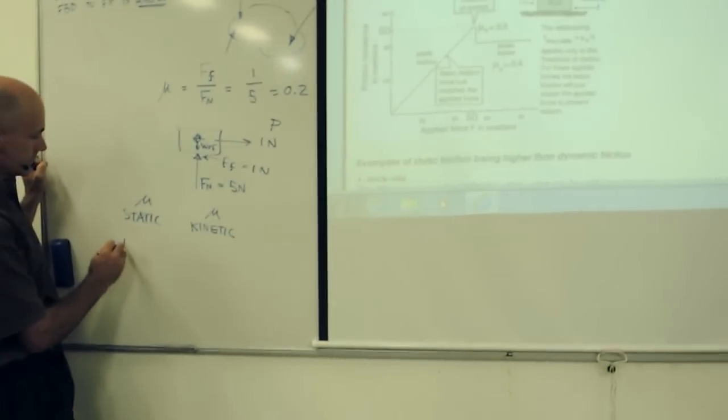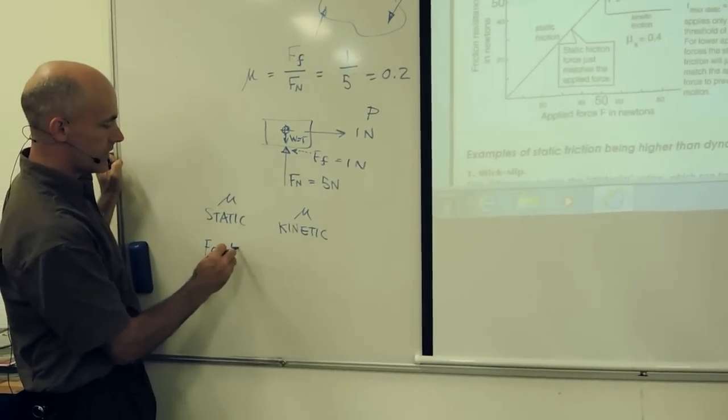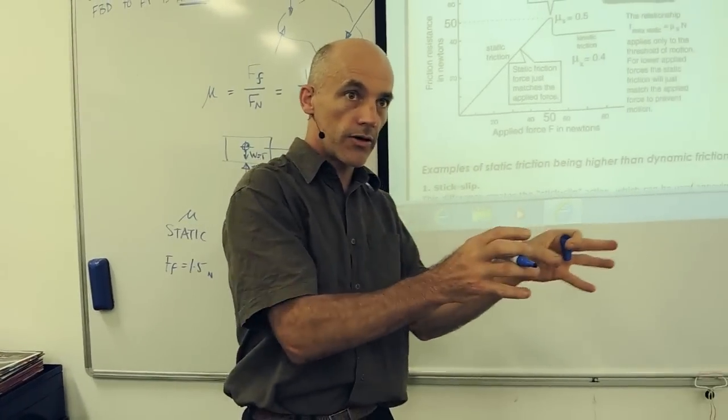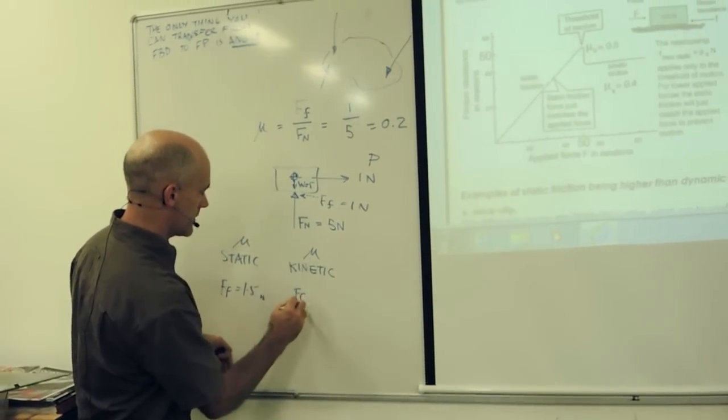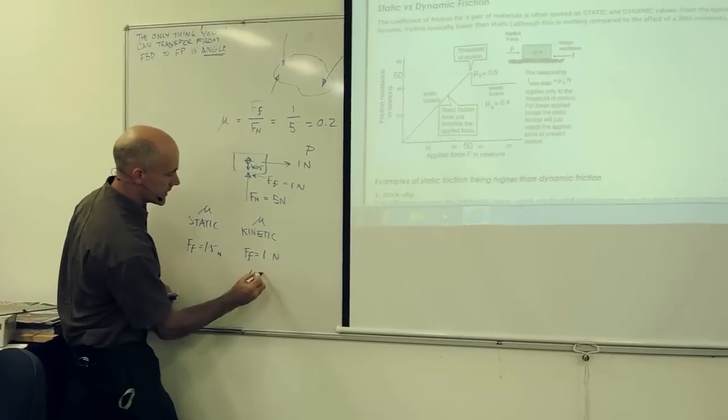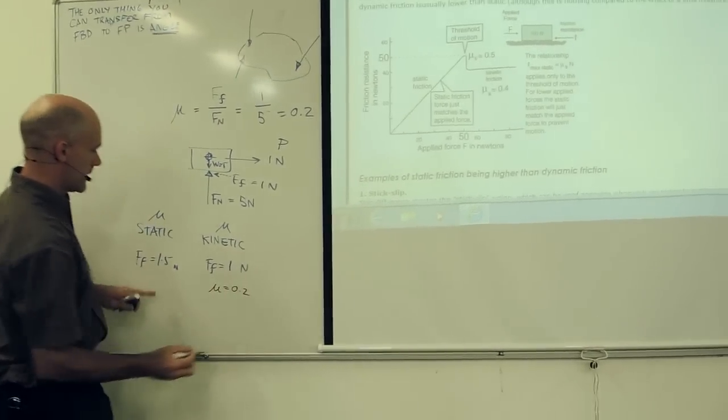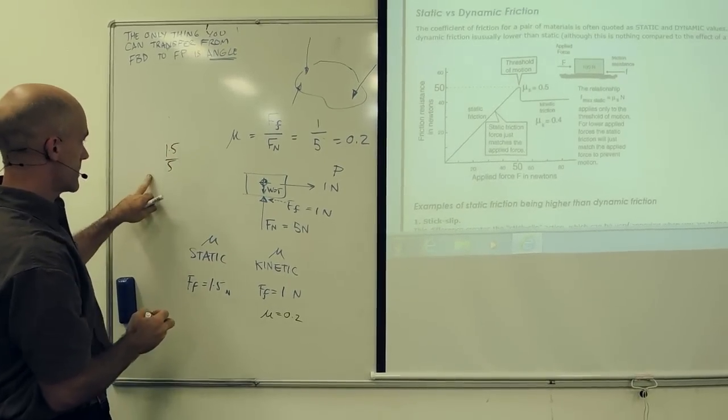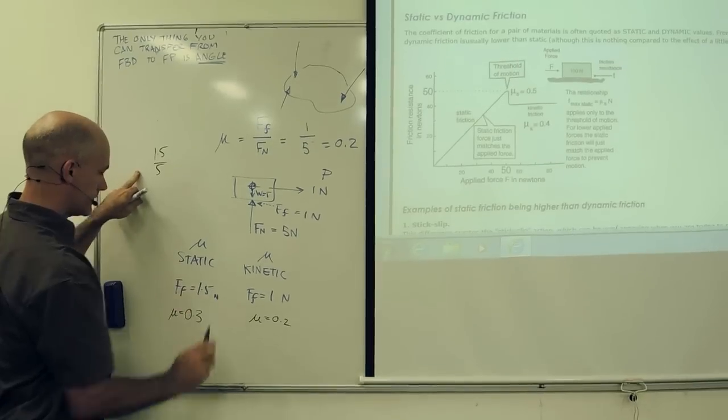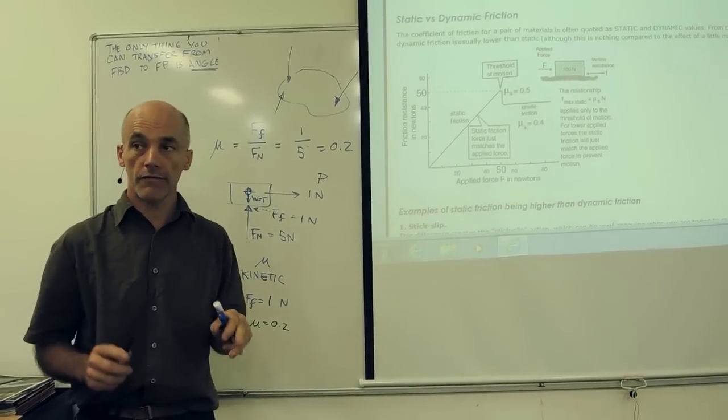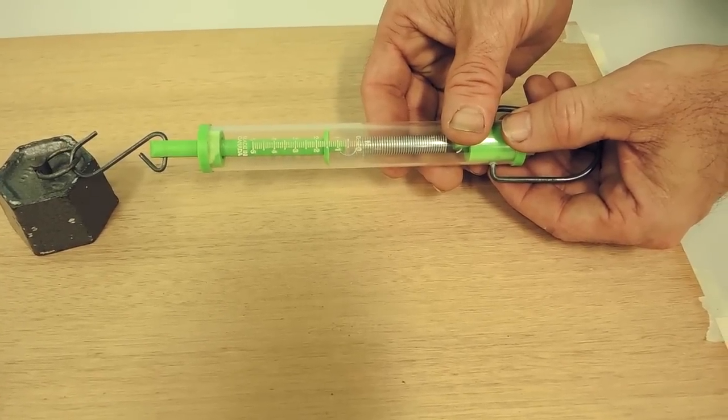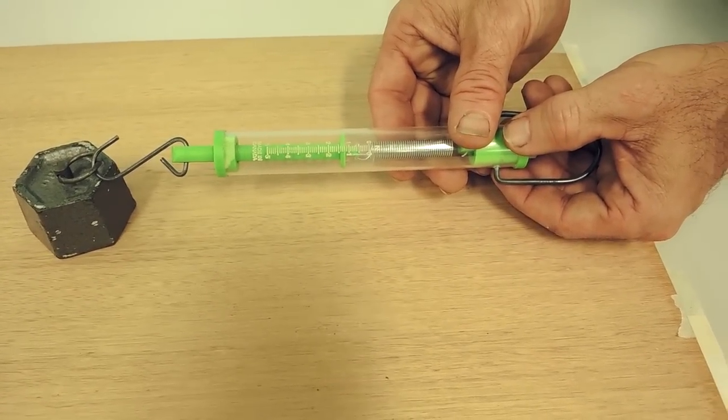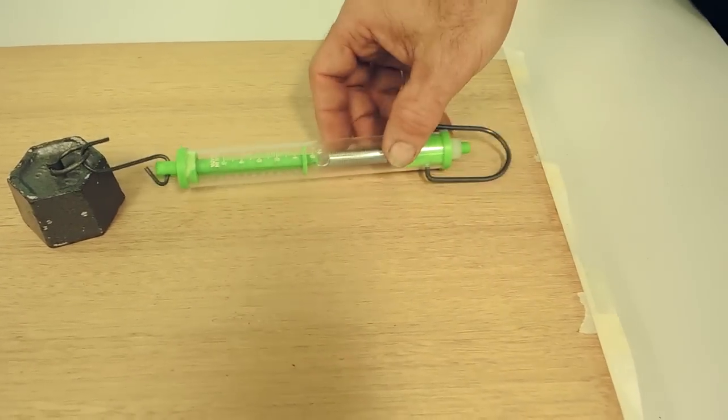When I first start trying to move the block along the wood, this friction force is 1.5 newtons. But once it's going, once it starts sliding, the friction force is only one. The coefficient of friction is 0.2 when it's one, and it'll be 1.5 divided by 5, which is 0.3. So we have a coefficient of friction of 0.3 when it's stopped and we're trying to get it moving, but once it breaks free and starts to move, the coefficient of friction drops to 0.2.